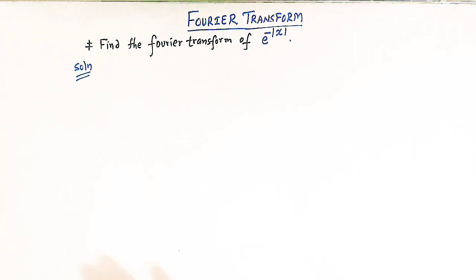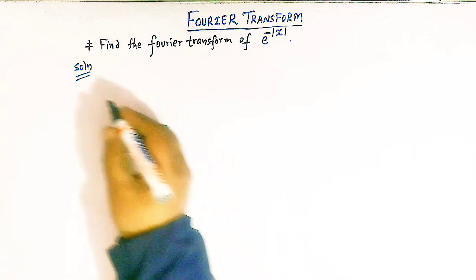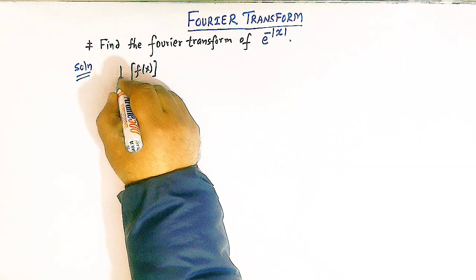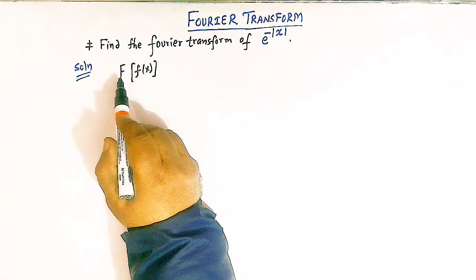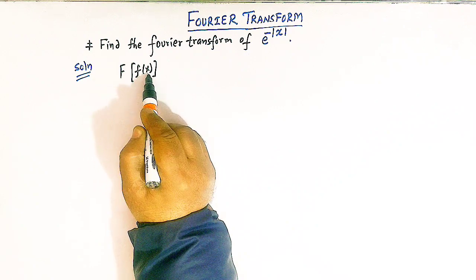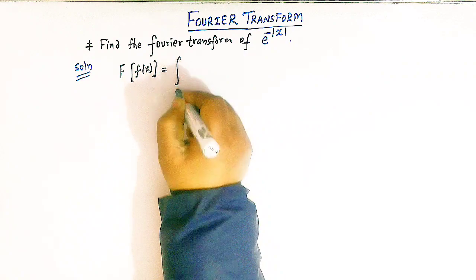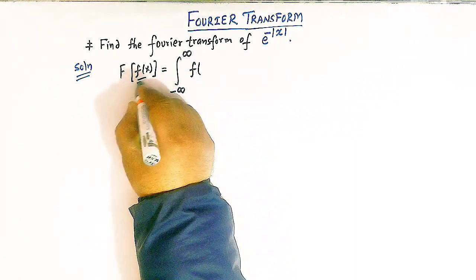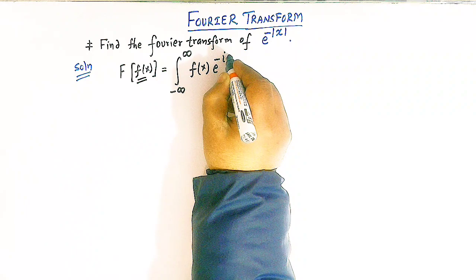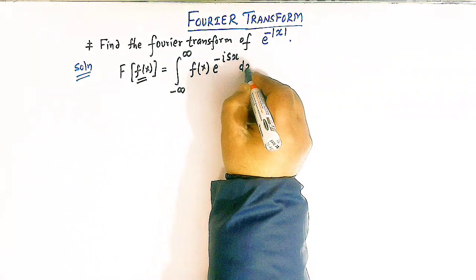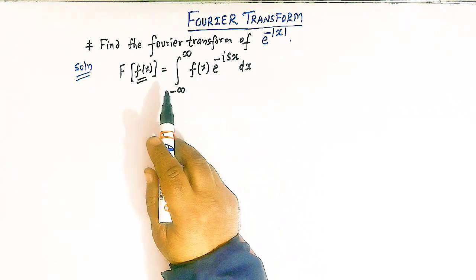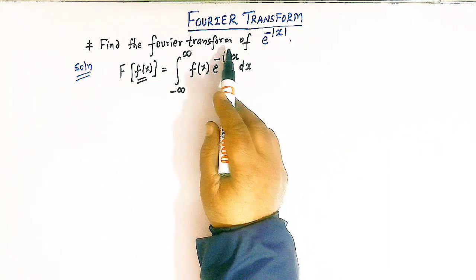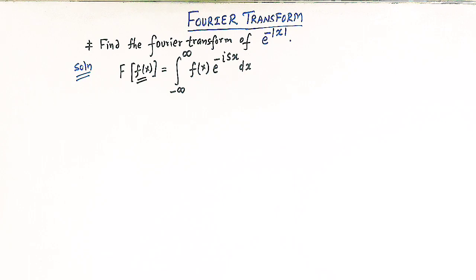Let us first define the Fourier transform of a function. Suppose we have a function f of x, then the Fourier transform of f of x is capital F of f of x, given by the integral from minus infinity to infinity of f of x times e raised to minus i s x dx. This is the definition of the Fourier transform, where the notation has its usual meaning.